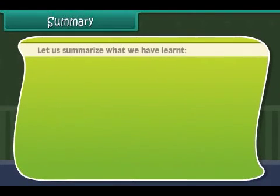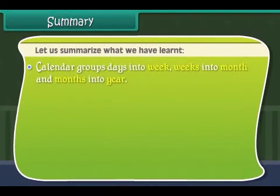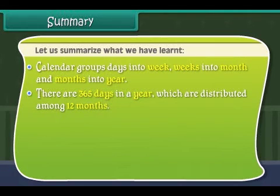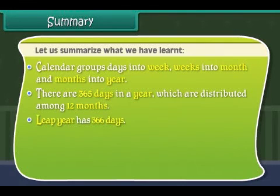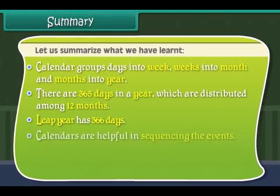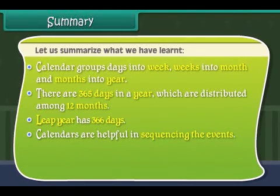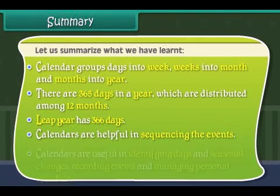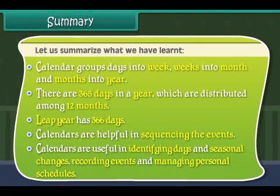Summary: A calendar groups days into weeks, weeks into months, and months into a year. There are 365 days in a year distributed among 12 months. A leap year has 366 days. Calendars are helpful in sequencing events, identifying days and seasonal changes, recording events, and managing personal schedules.